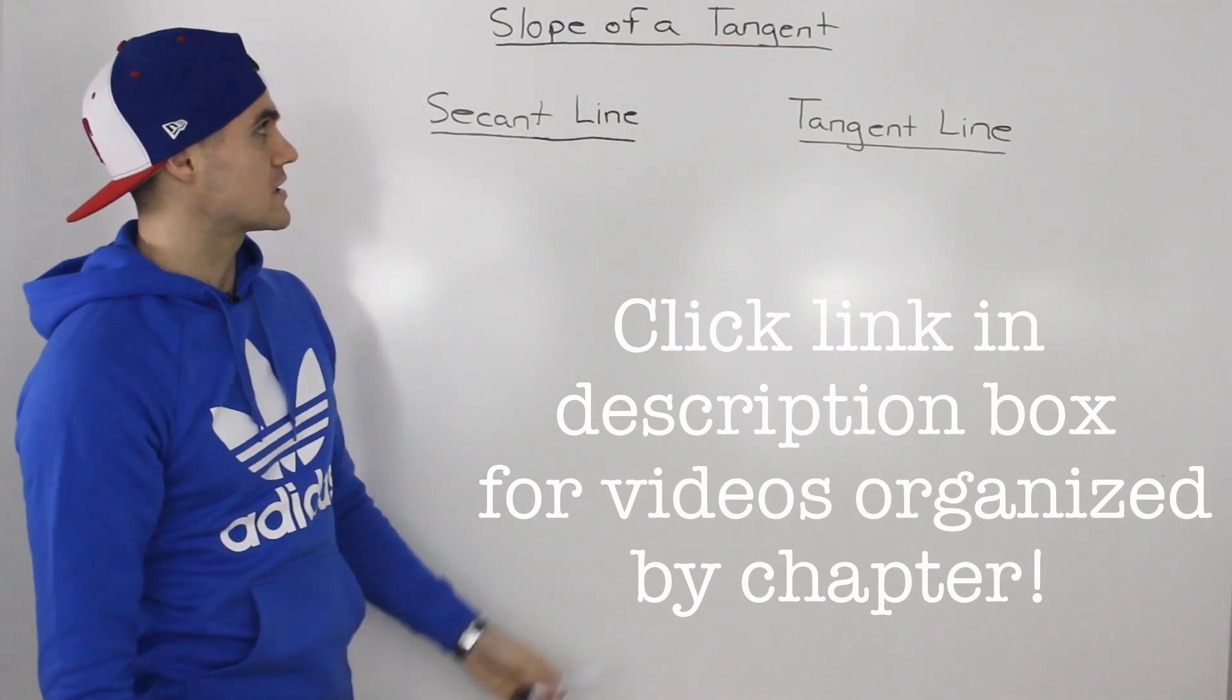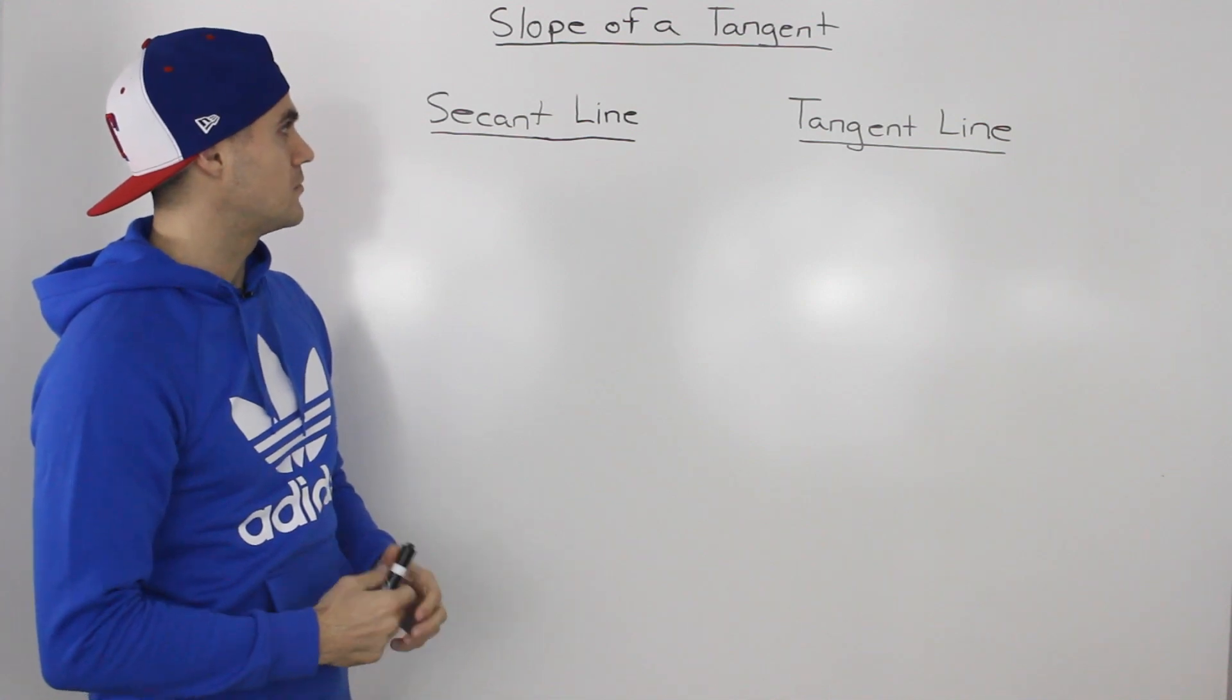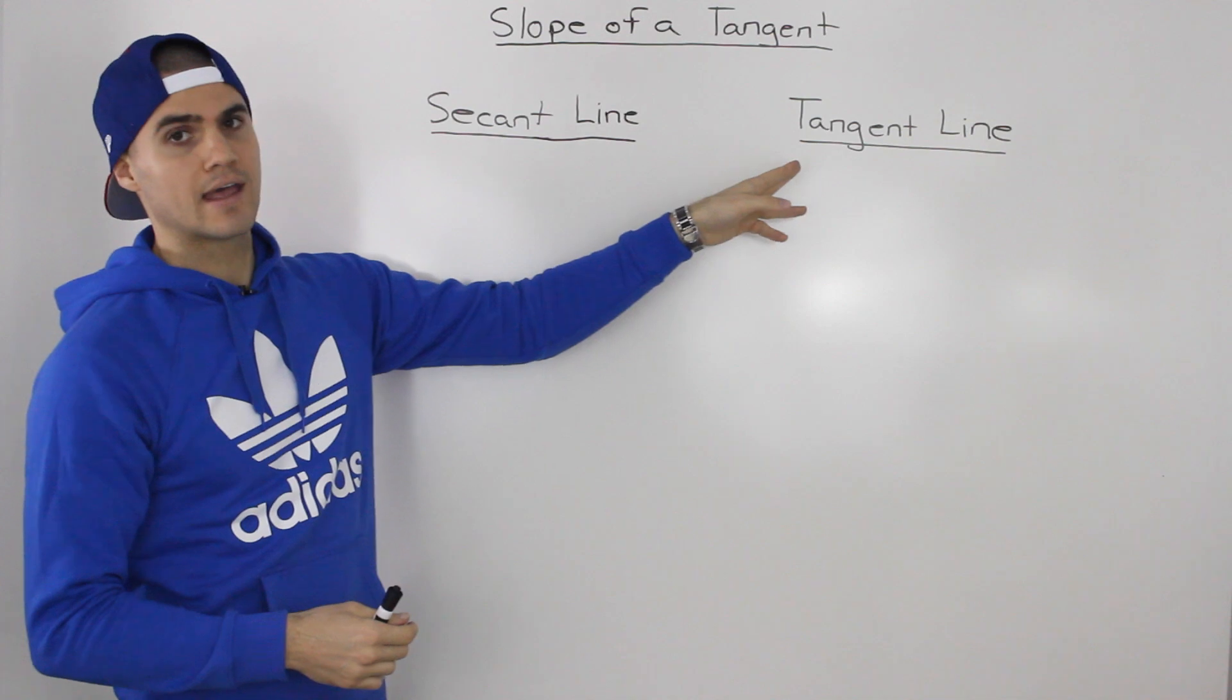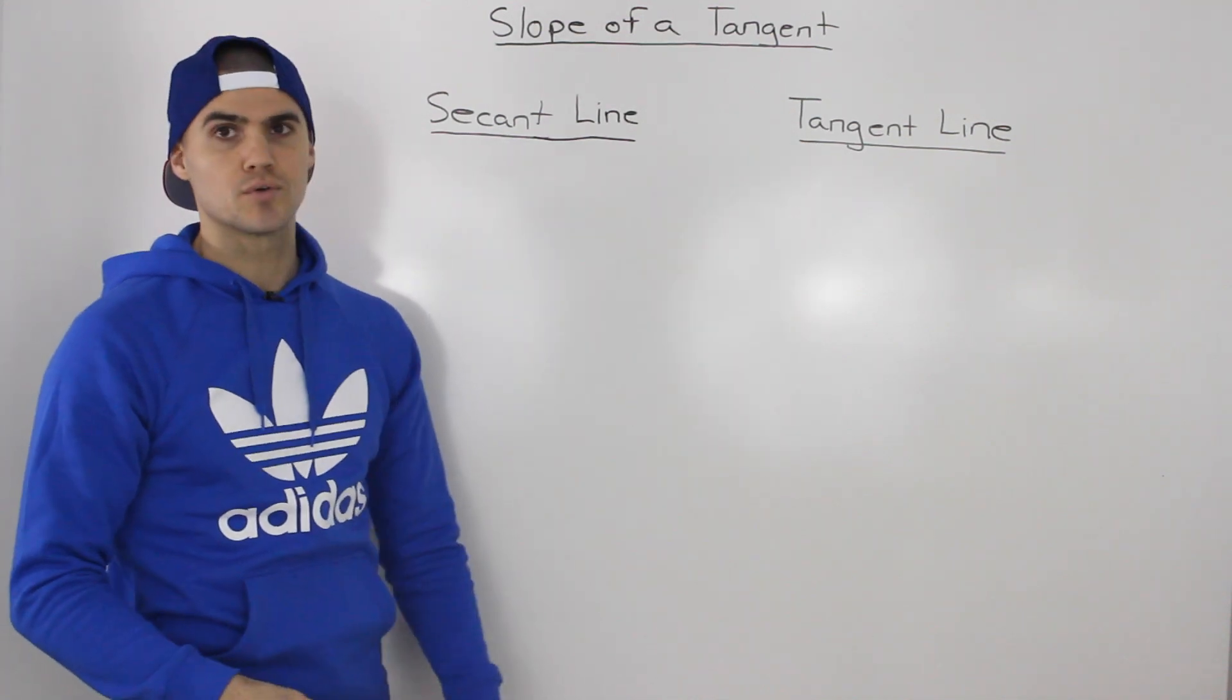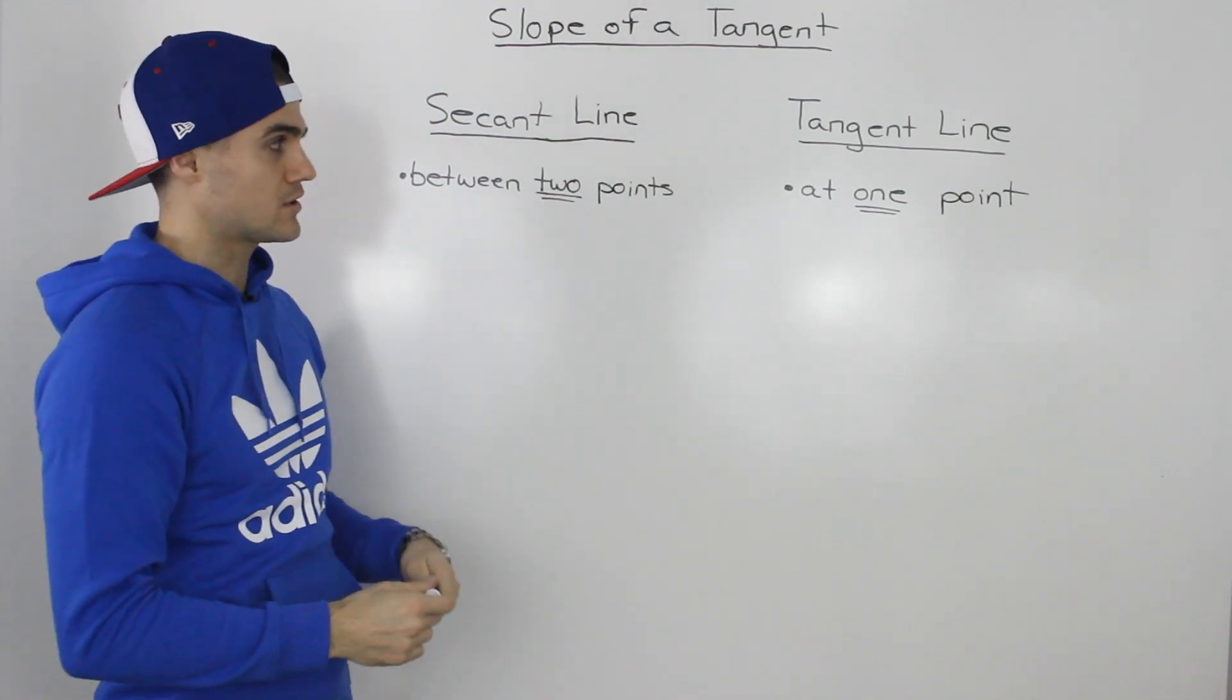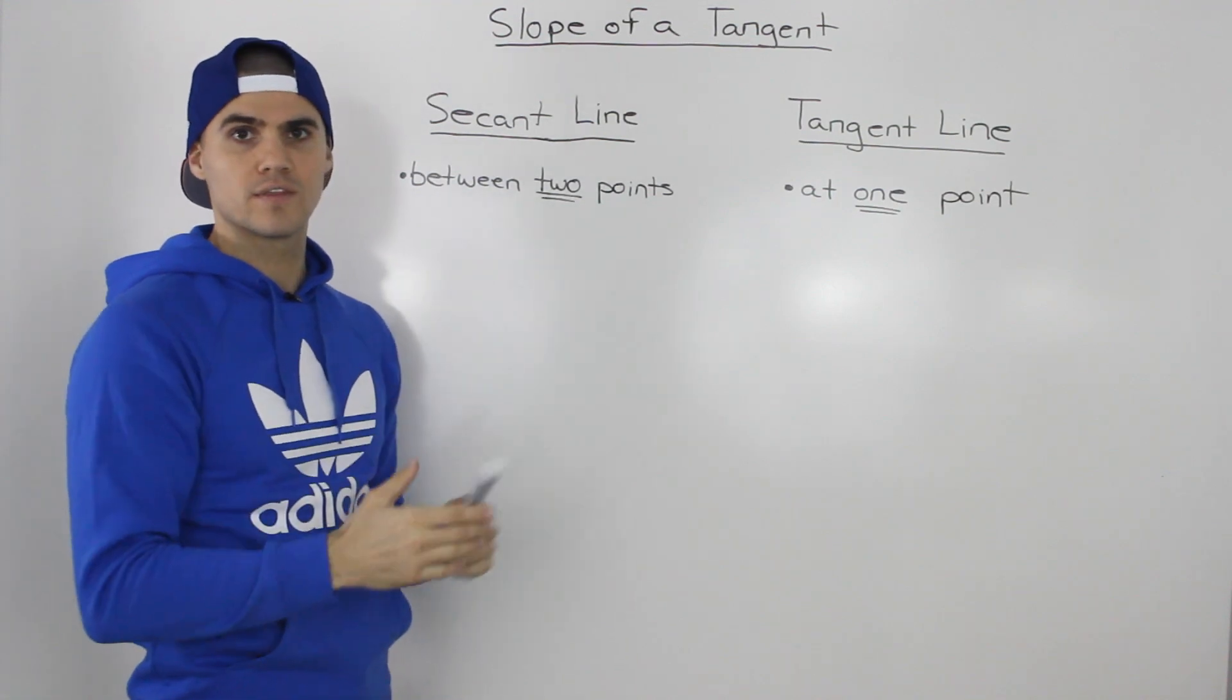What's up everybody, moving on to the next concept. We're going to talk about the slope of a tangent in this video, and before doing that I want to differentiate between a secant line and a tangent line. A secant line is always between two points on a function, while the tangent line is always only at one point on the function.